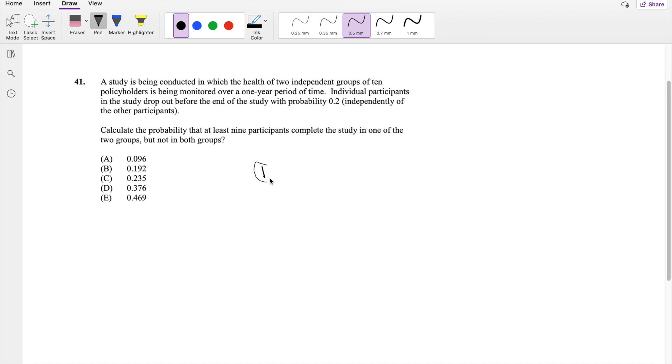So there's two groups, right? Group 1 and group 2. And we're looking for the probability that at least 9 participants complete the study. So at least 9 completed or 10 completed, right? But there's no 11 and there's also no 8 because there's only 10 in one of the two groups but not in both groups.